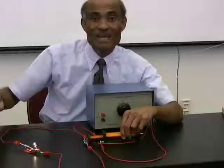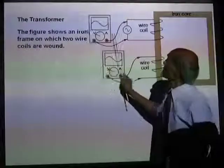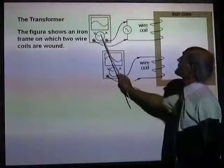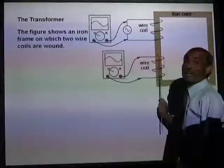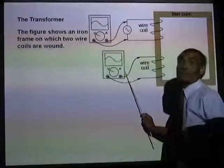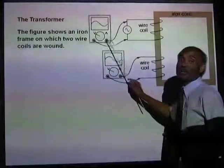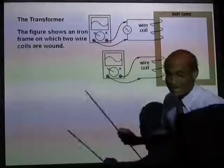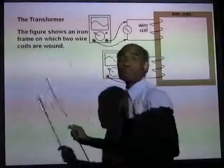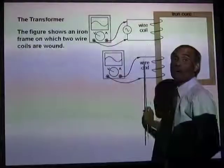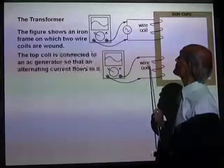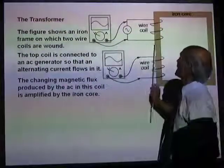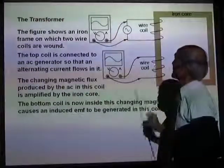A transformer consists of an iron core on which one coil of wire is connected to an AC source, and another coil of wire can be connected to a bulb or a galvanometer. When AC is turned on in the first coil, the changing magnetic flux produced induces an EMF in the second coil.